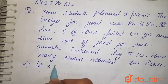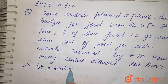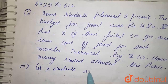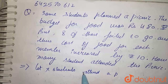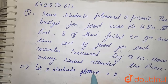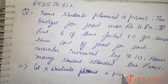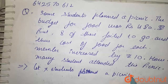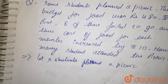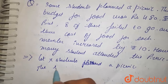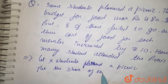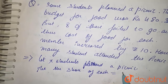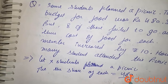Let X students plan the picnic. Then the share of each student is equal to 480 upon X.